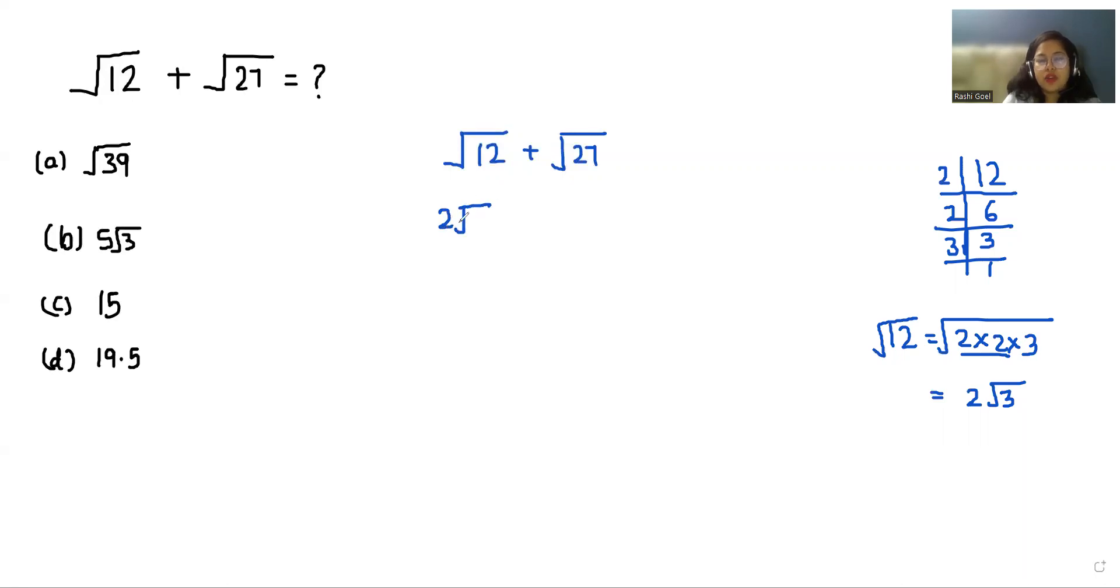Similarly, we'll solve 27. Square root of 27, we'll take the LCM of 3, then 3, 3, 1. So square root of 27 equals 3 times 3 times 3. We'll take one pair out in single form. So it's 3 square root 3.